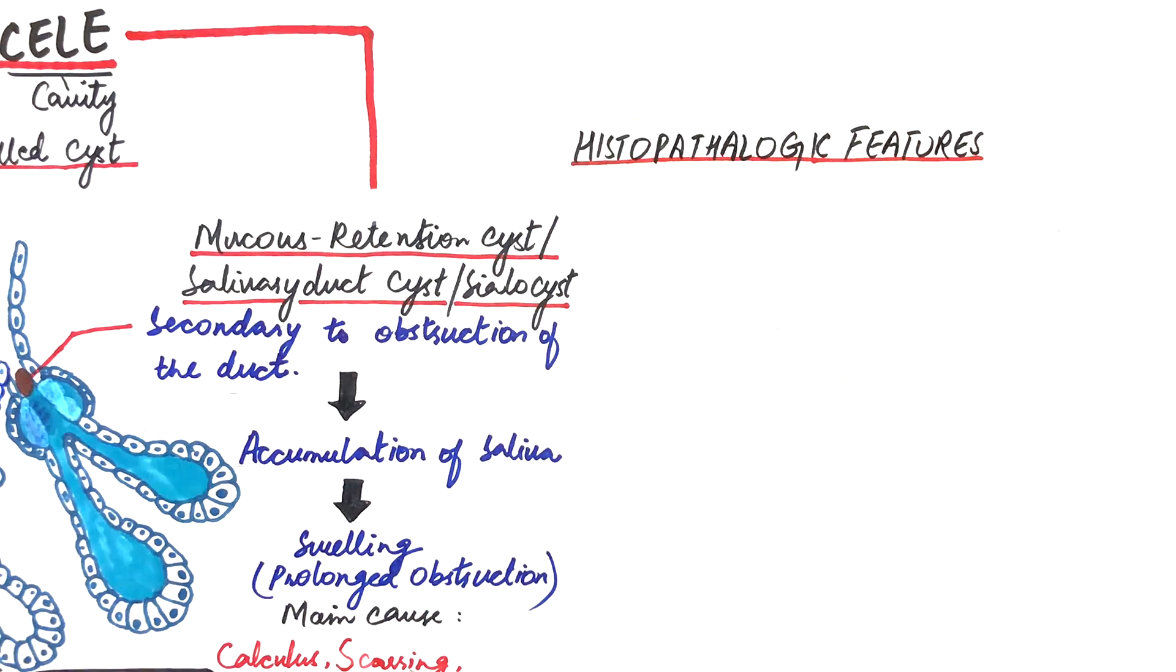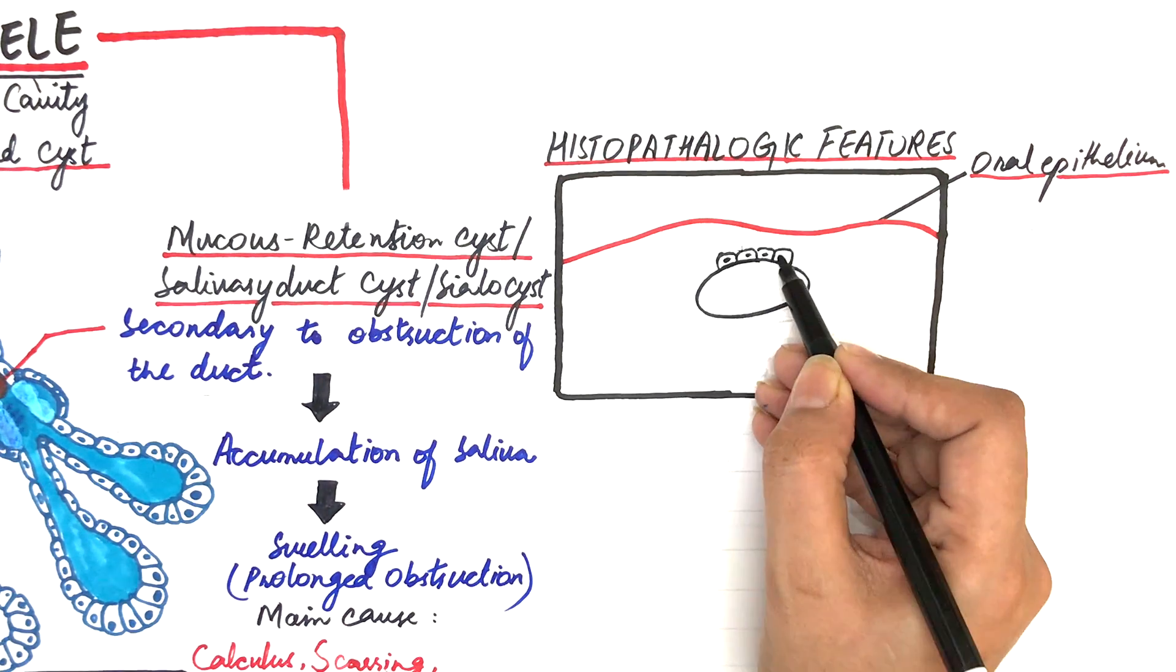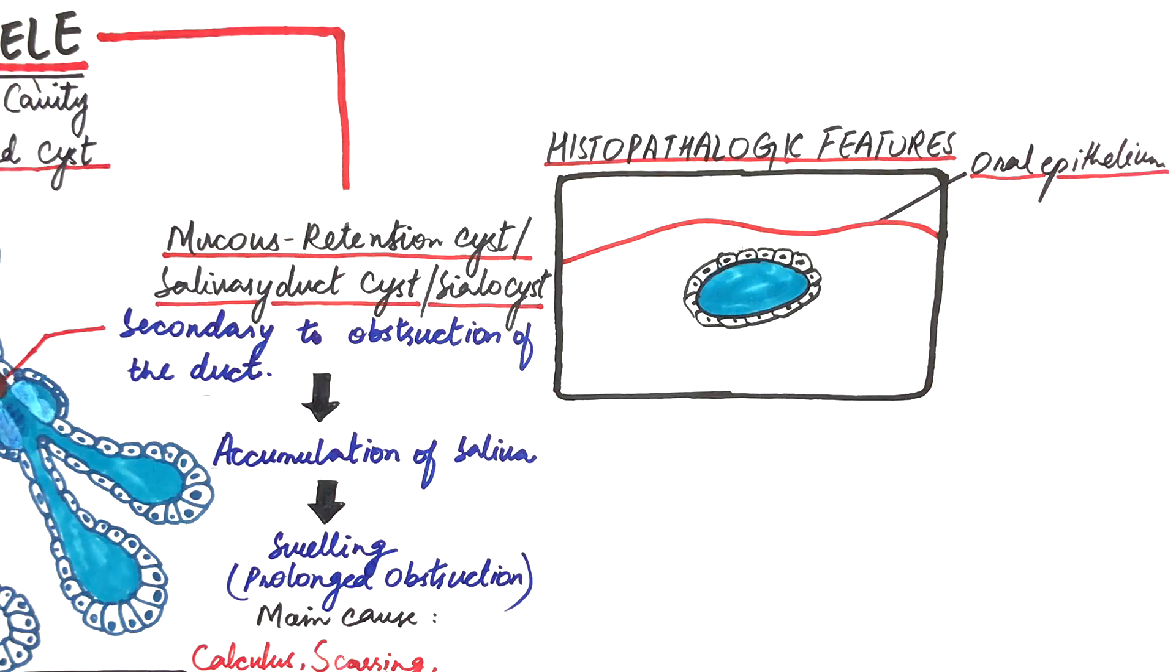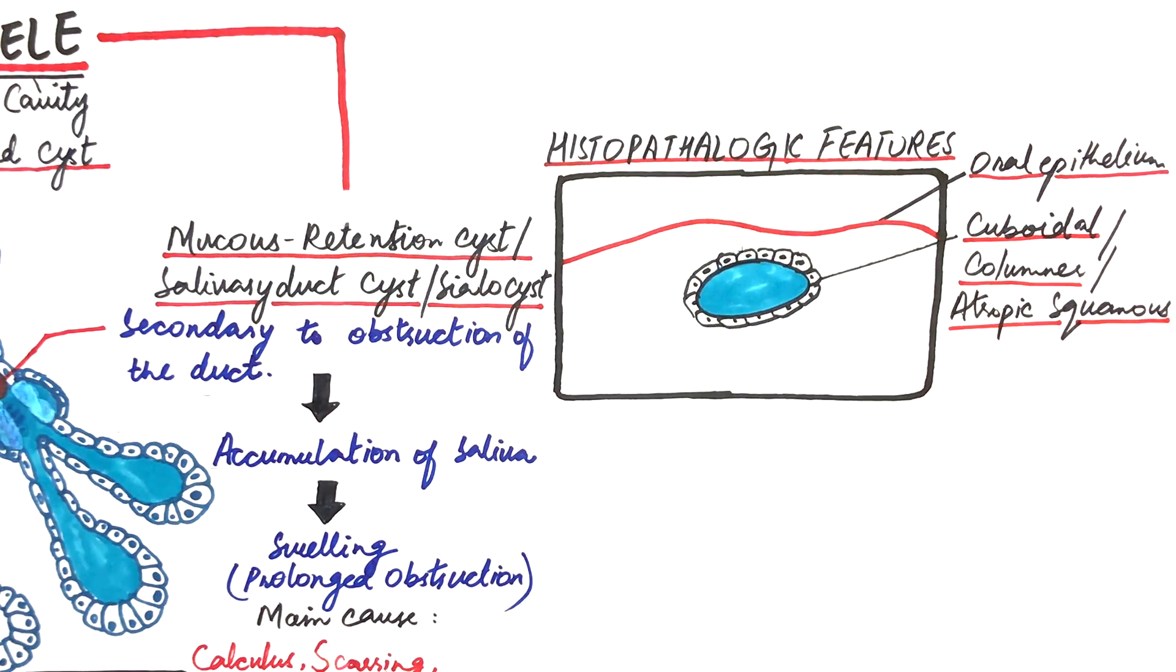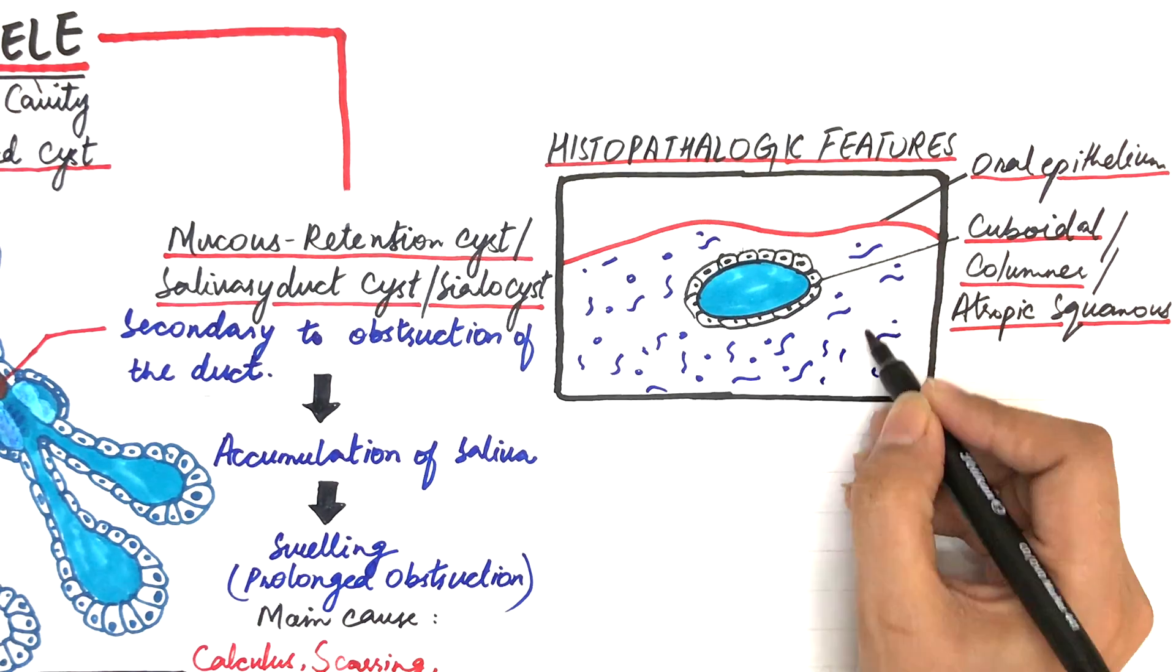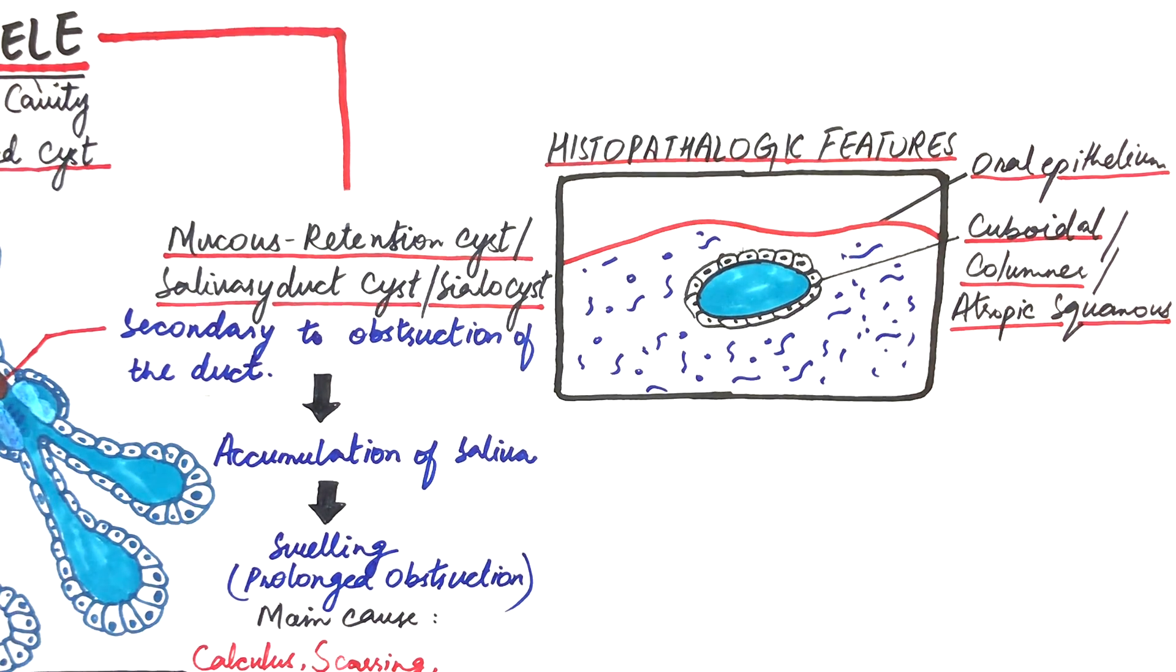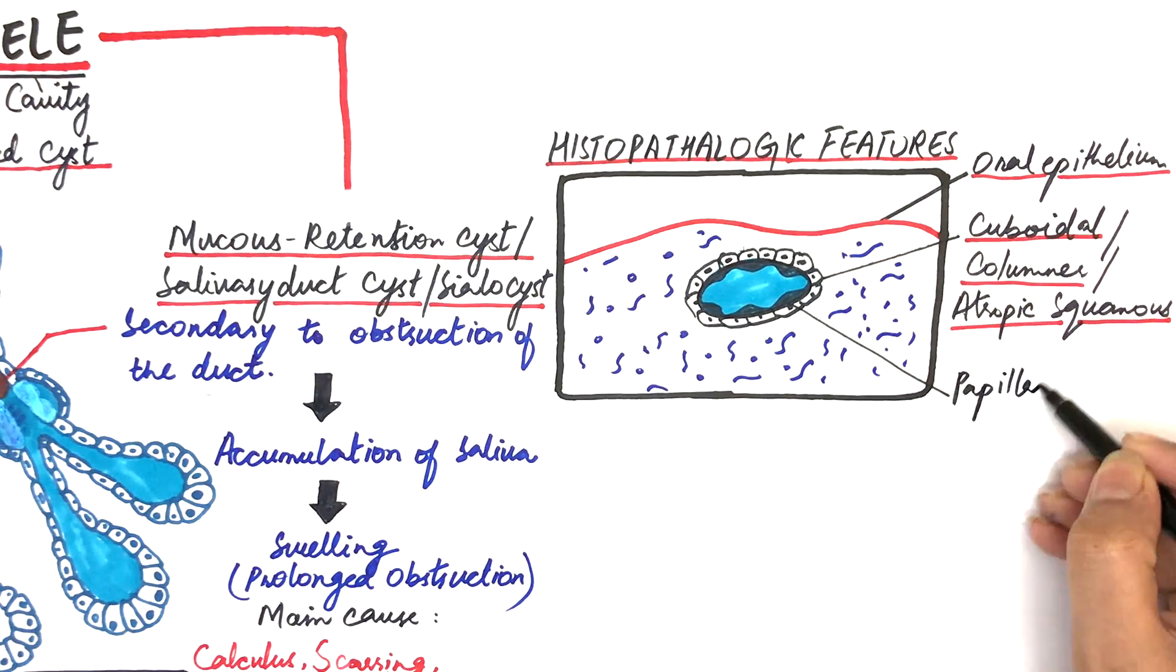On the other hand, in mucus retention cysts, the cystic lining appears to be variable and may consist of cuboidal, columnar or atrophic squamous epithelium, surrounding a small cystic cavity that contains thick mucoid secretions at its center. The epithelium often demonstrates papillary folds that project into the cystic lumen.